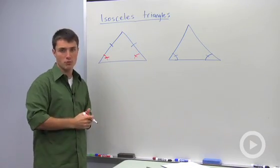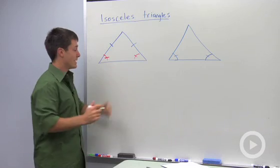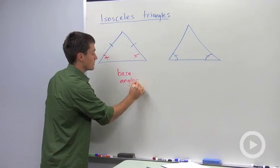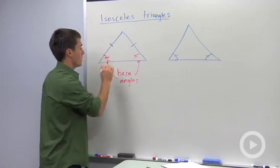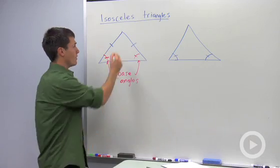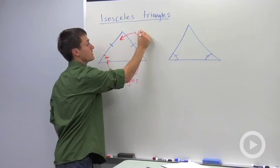First one was base angles. Our base angles are the two angles that are not part of the vertex. But wait a minute, what's the vertex? Well, the vertex is this angle right here.